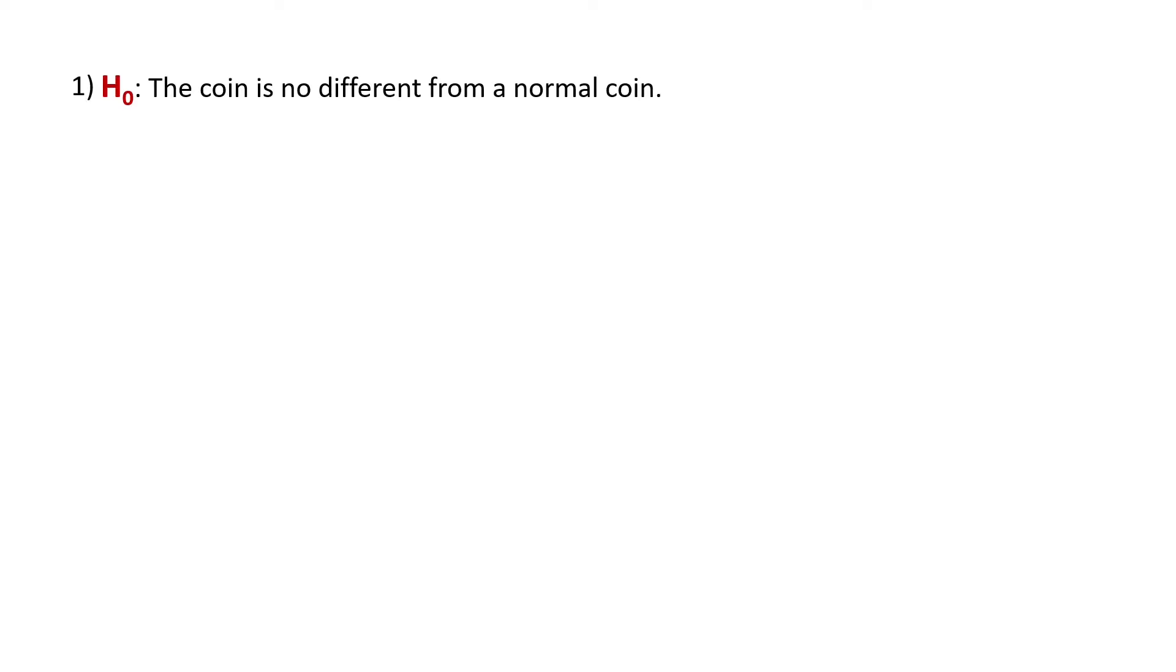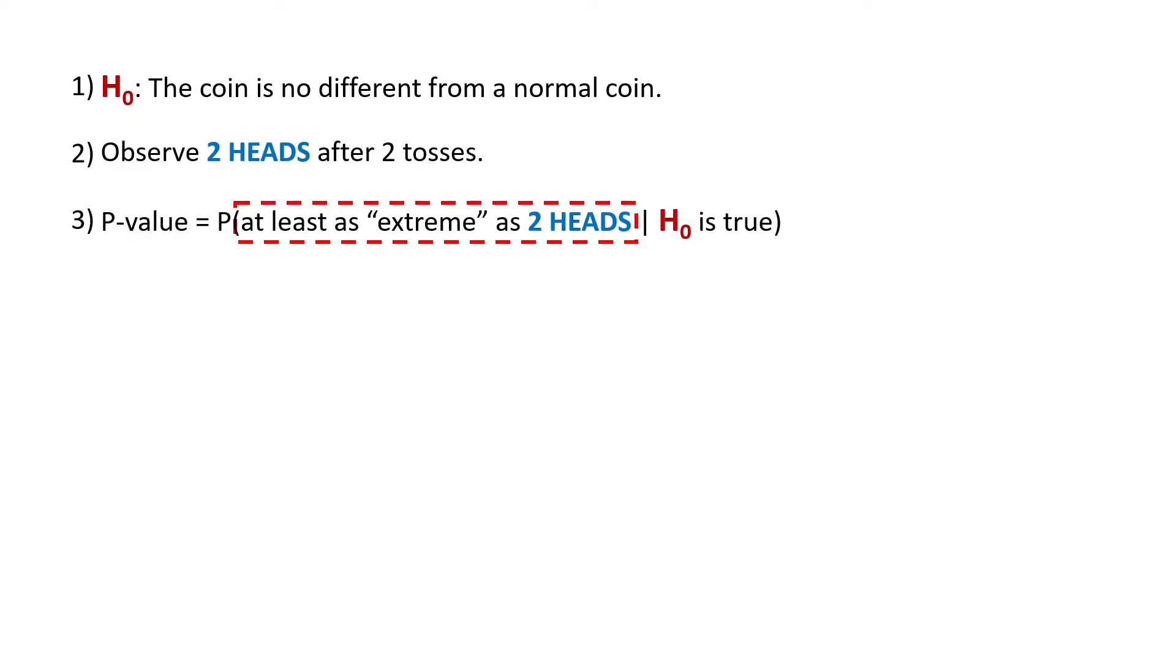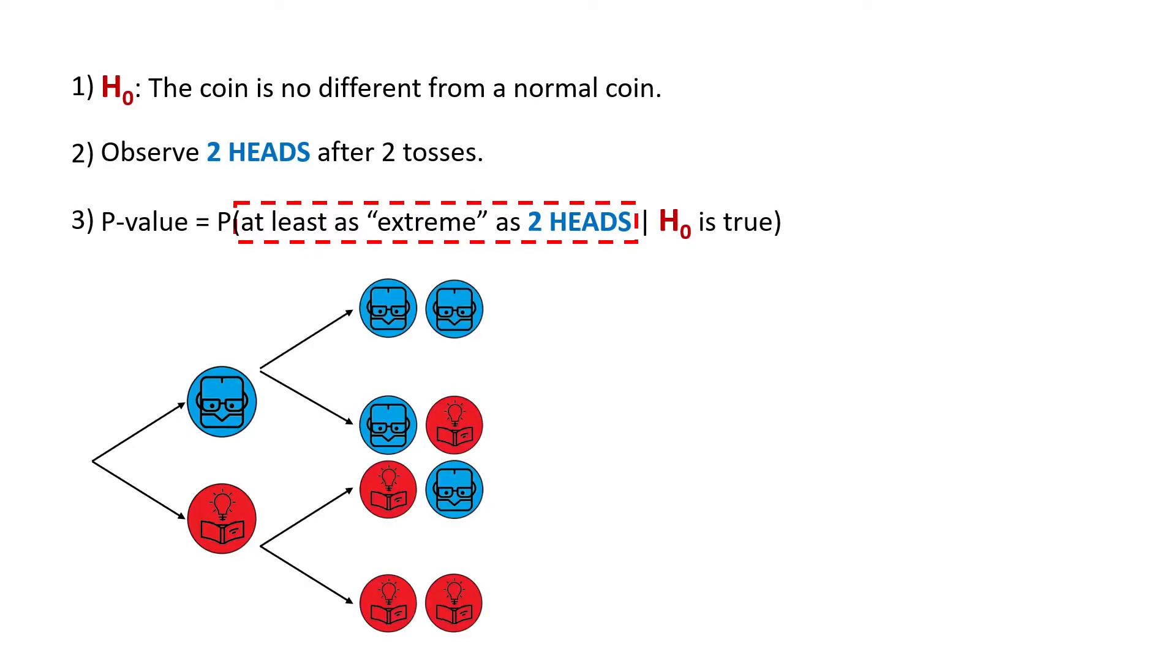So here we have the null hypothesis, which is exactly the same as in the general case. And we observe two heads after two tosses. And as we discussed, we compute the p-value as the probability of tosses that are at least as extreme as two heads given that the null hypothesis is true. To do that, we look at all possible outcomes of two tosses. So we toss the coin once and we get a 50-50 chance for heads or tails. Remember that our null hypothesis is true, so we can compute the probability as if the coin was fair.